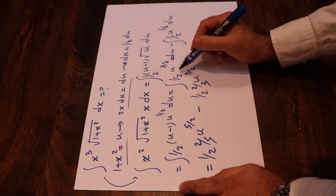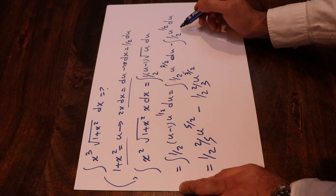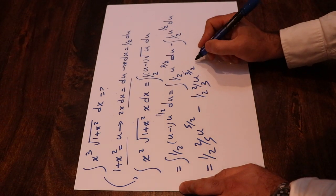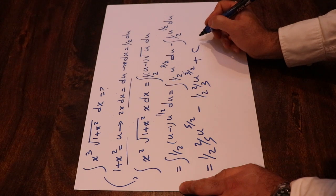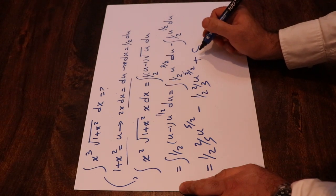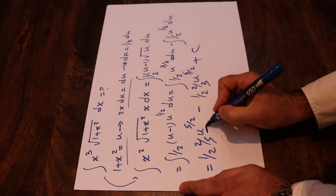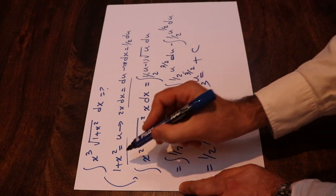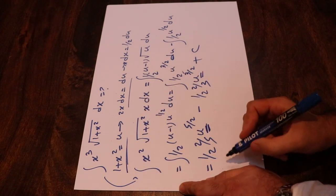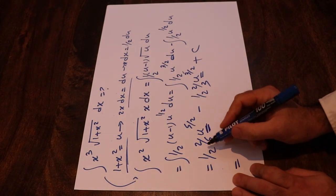If it's not clear for you how to calculate these integrals, write them for me in the comment section and I will explain how to do that. Plus c, which is the constant of the integral. So here, all you need to do is substitute u with its definition, which is given here: 1 + x².